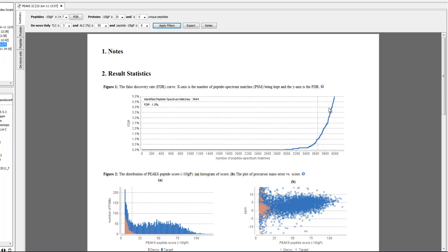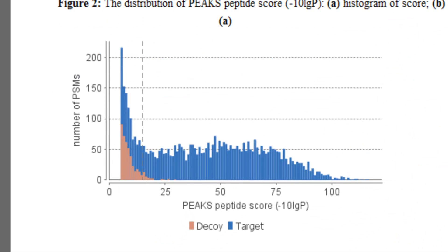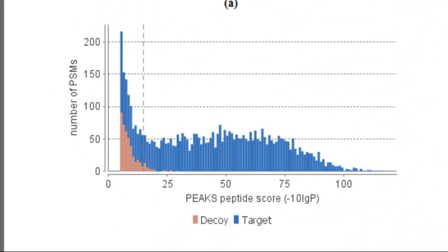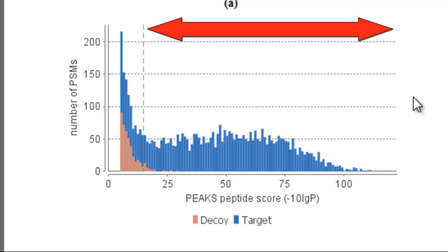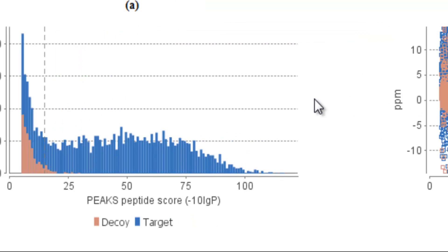Let's now examine two figures from the summary report. First, this bar graph shows the score distribution of the target and decoy hits. PEAKS uses an enhanced target-decoy method to estimate the false discovery rate. Here, we observe that there are very few decoy hits above the score threshold, indicating highly accurate results.